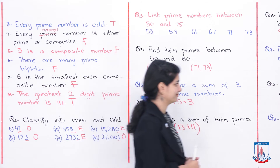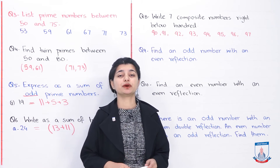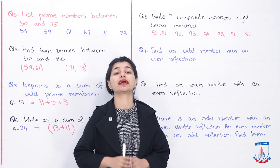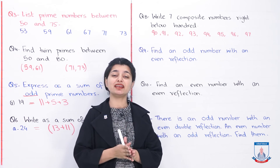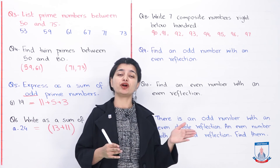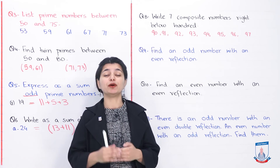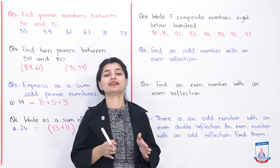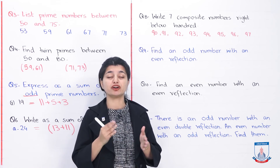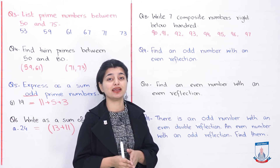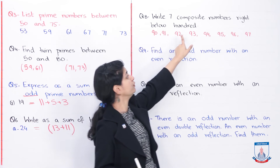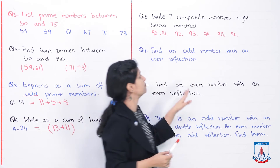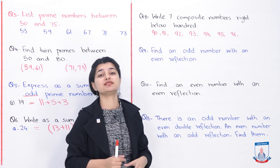The next question asks you to write seven consecutive composite numbers below 100. Consecutive means they don't break the chain. You cannot start at 97 because 97 is prime and would break the sequence. The seven consecutive composite numbers are: 90, 91, 92, 93, 94, 95, and 96 — all of which are composite and fall before 100.